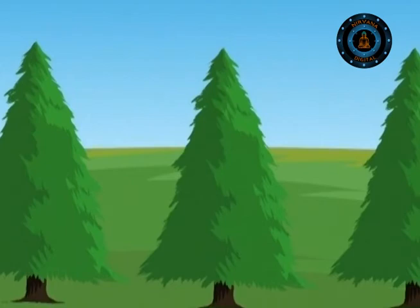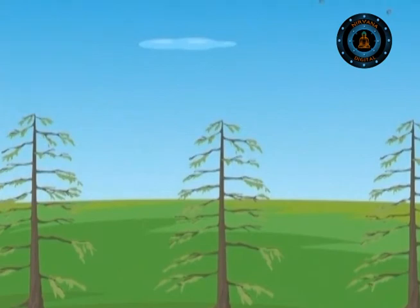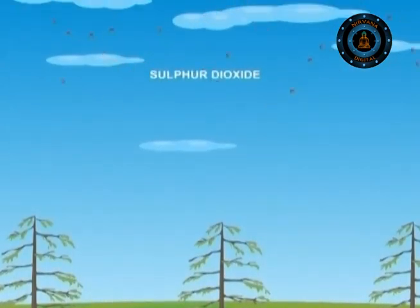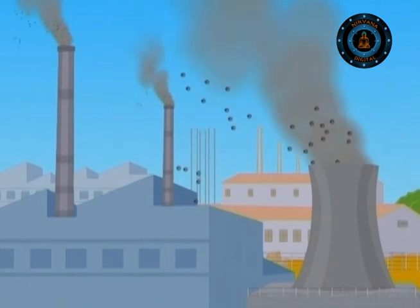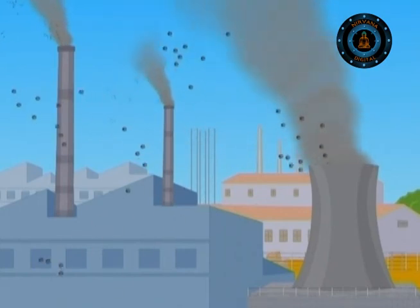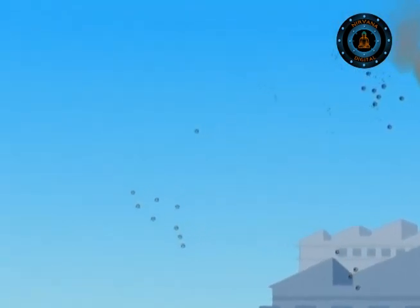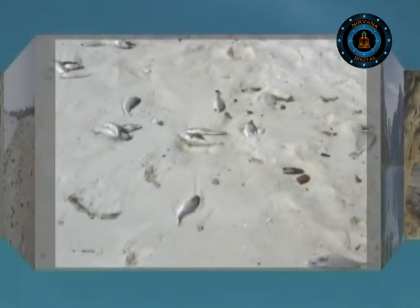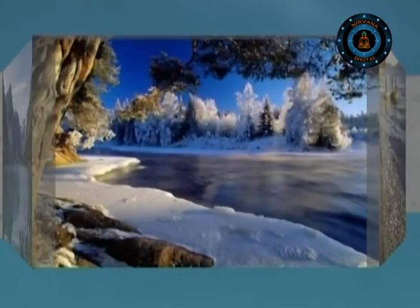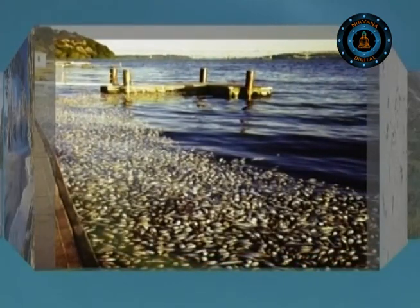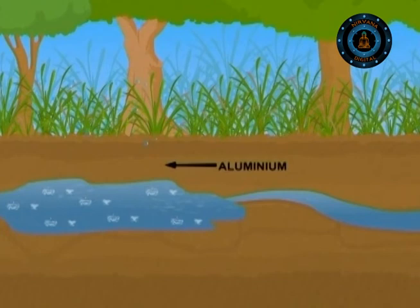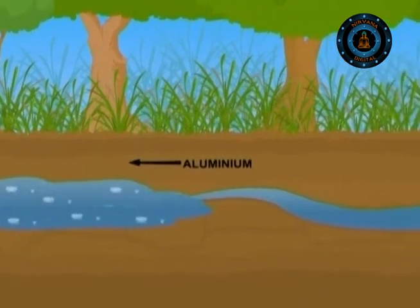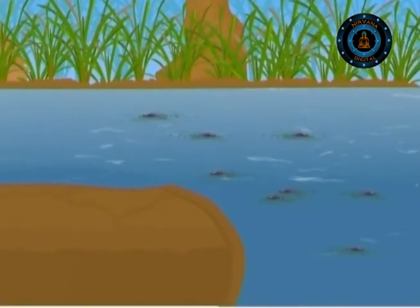Acid rain is another major pollution problem caused by gases like sulfur dioxide. This gas is released when fossil fuels are burned, can travel thousands of kilometers on the wind, and dissolves in rainwater, making it acidic. Acid rain has been responsible for thousands of rivers in Norway and Sweden losing large populations of fish. These acid rains can also dissolve aluminium present in soils, which is poisonous to many creatures.